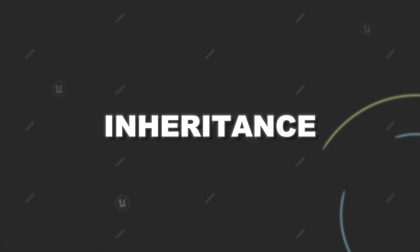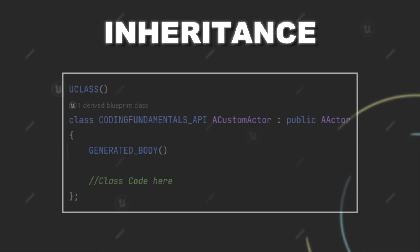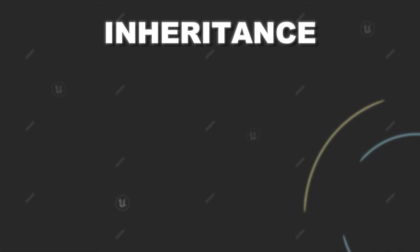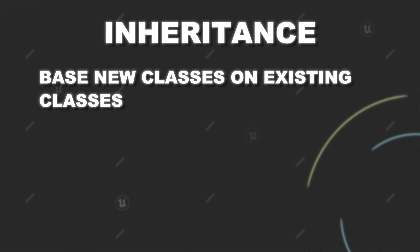Here is another core concept you need to understand to survive in Unreal Engine: inheritance. Probably when you created your first classes for Unreal Engine you were wondering what this part of the class declaration is. This part basically indicates from which class your new class inherits from. Inheritance basically means that you base a new class on the implementation that you did in another class.